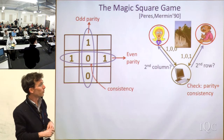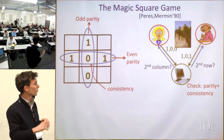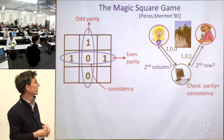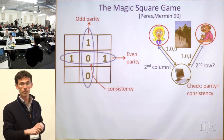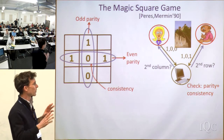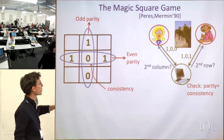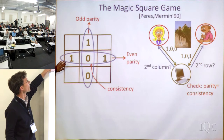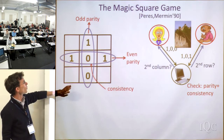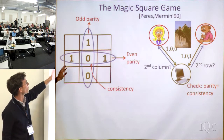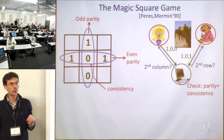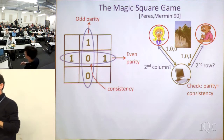There's one important constraint on the players: they're cooperating and working together, except that when the game starts, they don't get to talk to each other — no communication is allowed. That's what makes it hard, because Alice knows which column she's been asked, but she doesn't know what Bob is being asked. In particular, she doesn't know on which of her three cells the consistency constraint is going to apply.